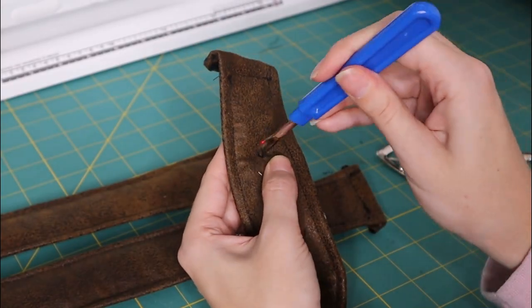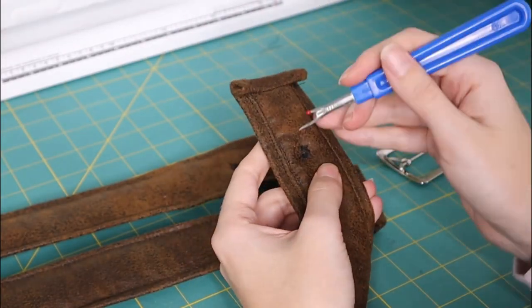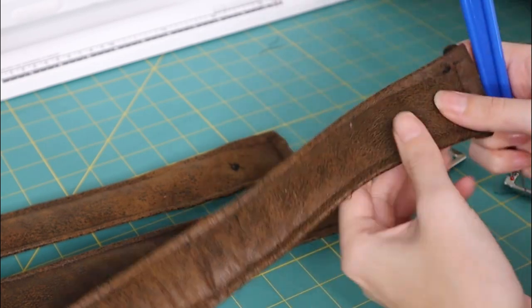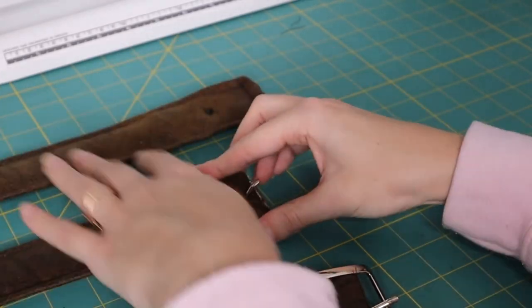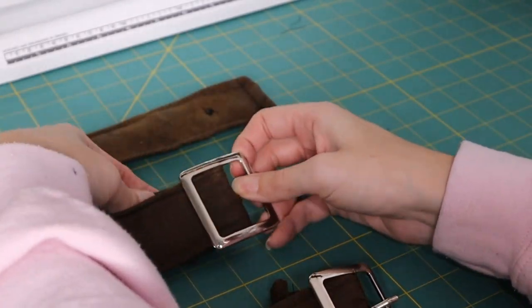So now I'm going to go ahead and use my ripper and make a hole in the center of the buttonhole, and this hole is just big enough for our belt buckle to get through. And now our belt is actually attached to a belt buckle.